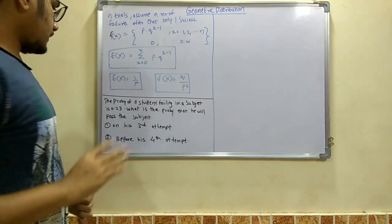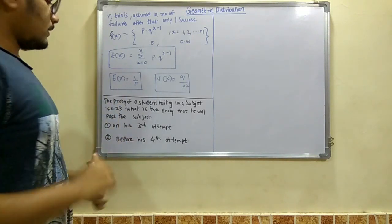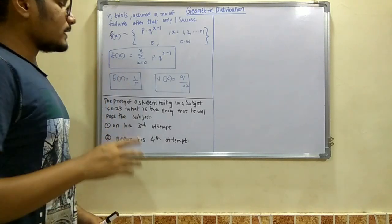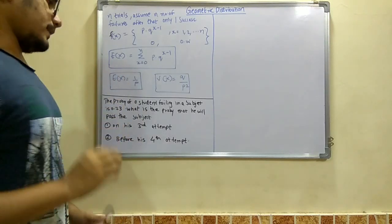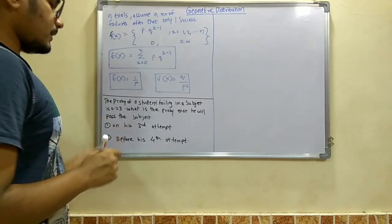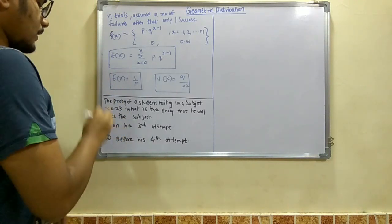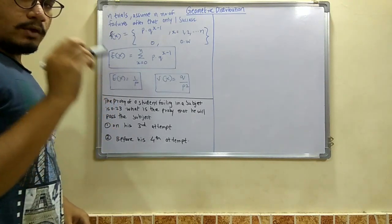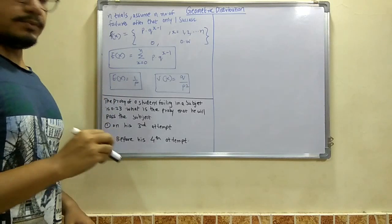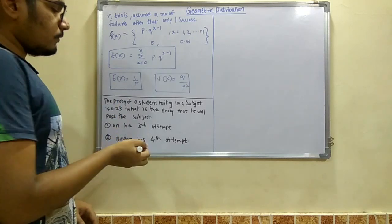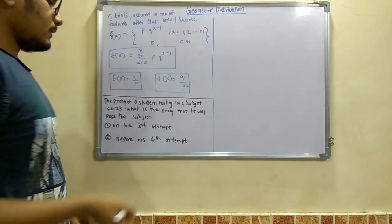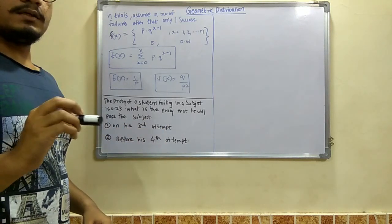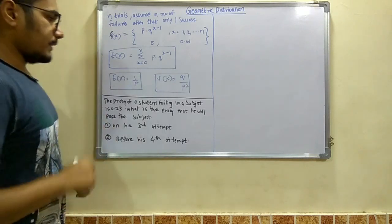So let's get started. First of all, the problem is that the probability of a student failing in a subject is 0.23. What is the probability that he will pass the subject? Now two cases are given. On his third attempt, exactly on his third attempt he will be clearing the subject. Or before his fourth attempt. Means before that, his first attempt, second, third, till third attempt.